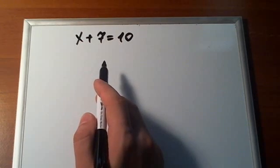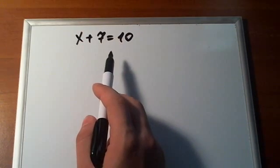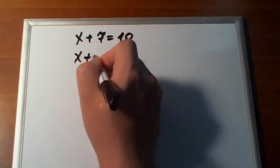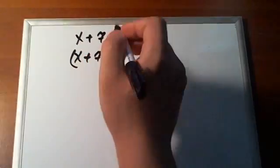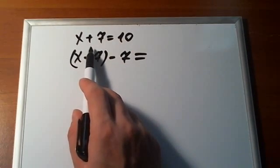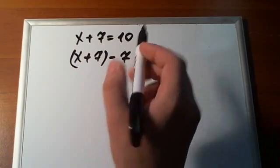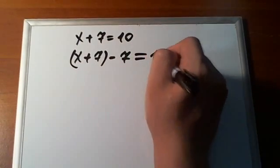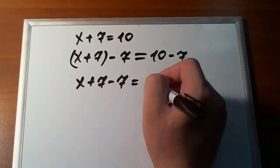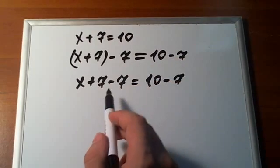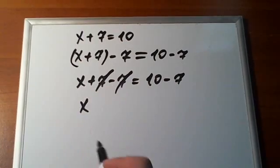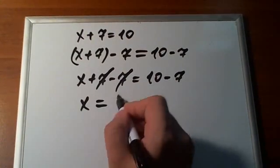In order to do that, we need to subtract 7 from both sides of the equation — from the left side and from the right side. x plus 7 is the left side of our equation. If you subtract a number from one side of the equation, you need to subtract the same number from the other side as well. So, x plus 7 minus 7 is equal to 10 minus 7. Subtracting 7 from this side takes care of those 7s, so we have x left on the left side, and 10 minus 7 is 3.